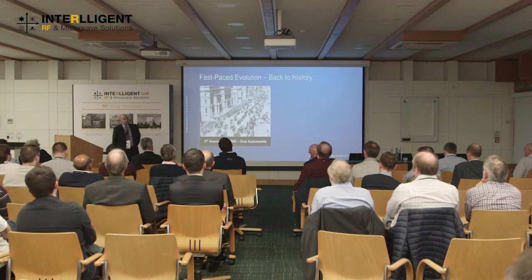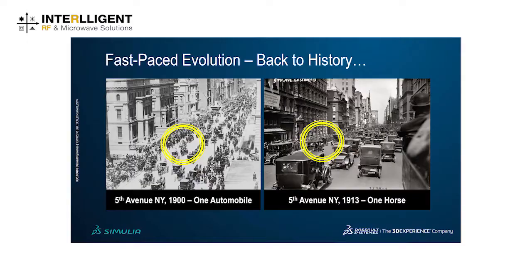So let's take you back to the past, a little bit before my time. In the 1900s, you can see that on Fifth Avenue everywhere was horse and carts — but one automobile, or one vehicle as I would call it. Thirteen years later, what do we see? Rapid evolution, in those days. And we see one horse and cart.